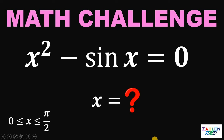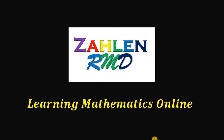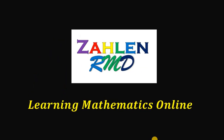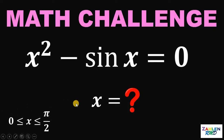Can you approximate the value of x? Good day everyone, here's our math challenge for today. Approximate the value of x in this equation: x squared minus sine x equals 0, wherein x is from 0 to pi over 2.